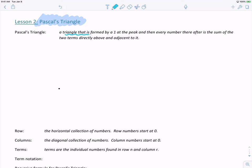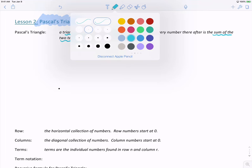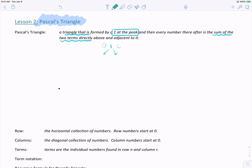Pascal's Triangle is a particular type of triangle that is formed by having a 1 at the peak of a triangle. Then every number thereafter is the sum of the two terms directly above it. We start our column off with a 1 up front. 0 plus 1 gives me a 1 value here. 0 plus 1 on the right gives me another 1.